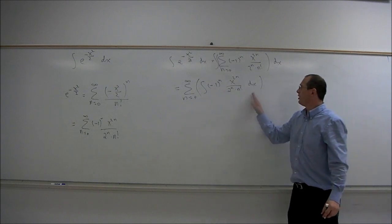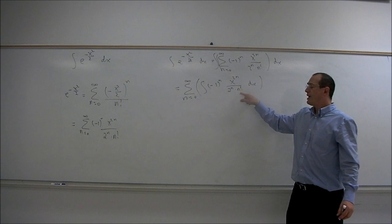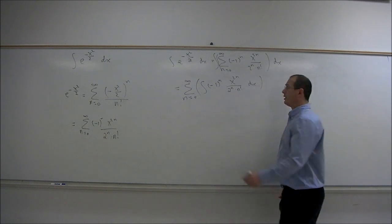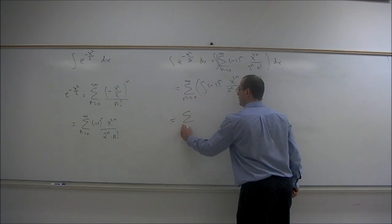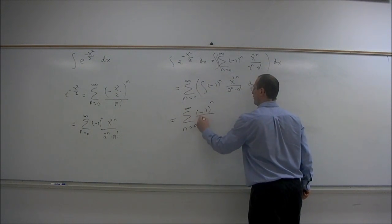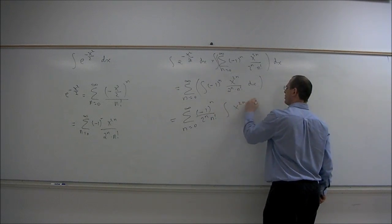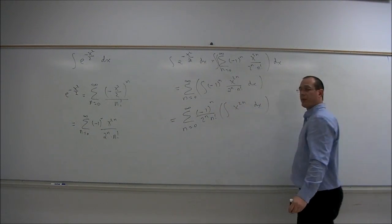Now this integral is easier than it looks. X is our variable, so (-1)^n, 2^n, and n! are all constants. So let me emphasize that by removing them from the integral. We're just left with the integral of x^(2n) dx.